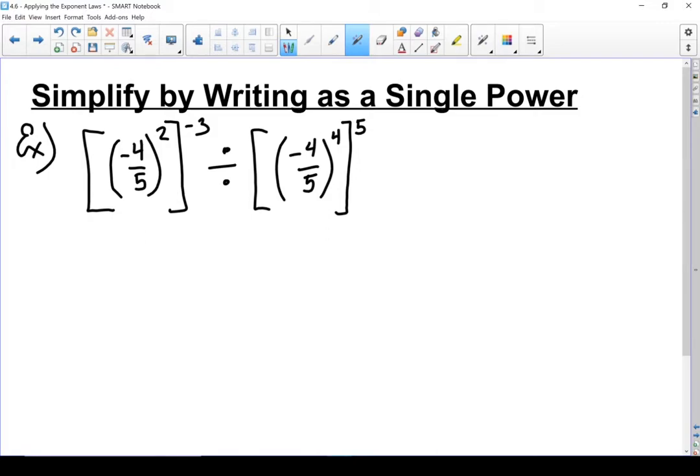Right now I've got the exact same base of negative four-fifths, and I don't really want to mess with that. So what I'm going to do instead is deal with that power of a power, and I'm also going to deal with that power of a power right there. I'm going to try and keep those bases the same for as long as possible.